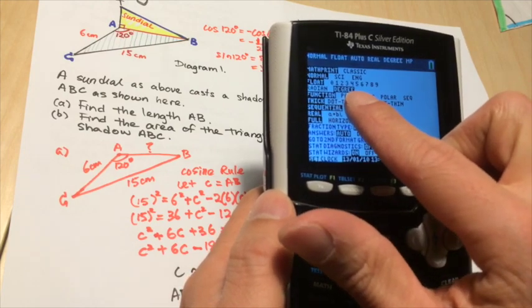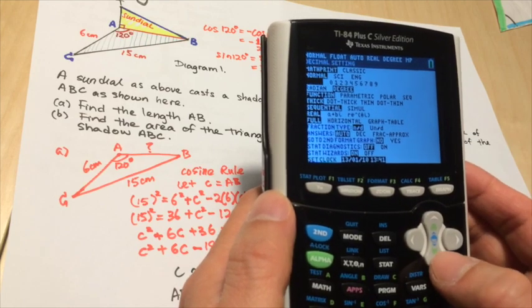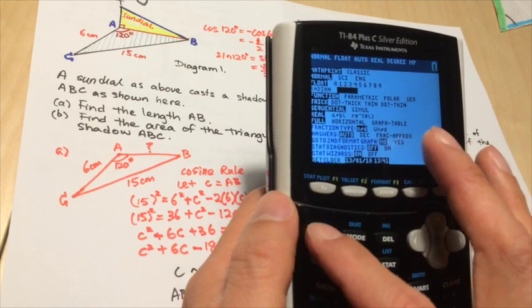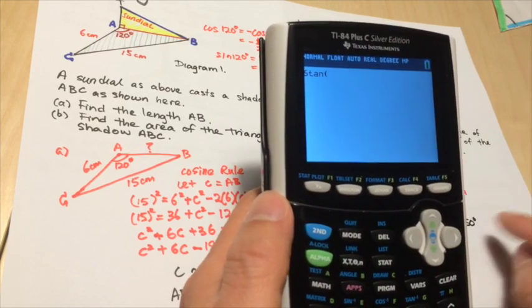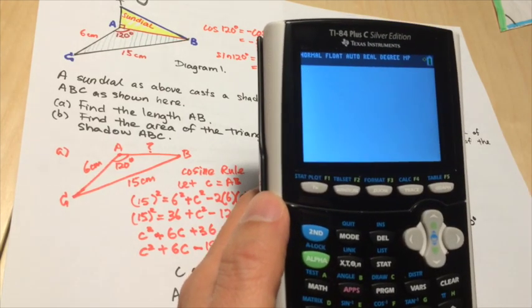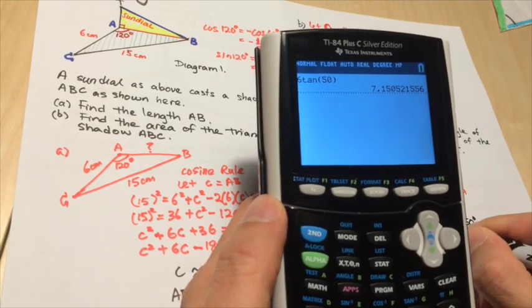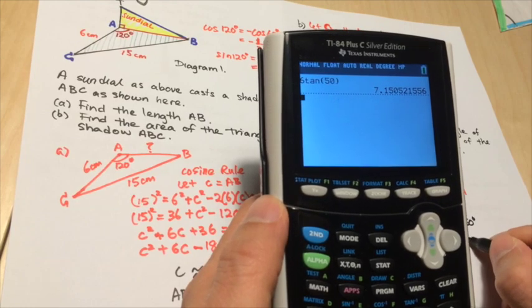Is it in degree? Yes, it is in degree. If it's not, then make sure you change it to degree by going down and press enter, for example, degree. And then second quit to get back to the original place. And then you put in 50 degrees. 6 tangent 50 degrees and then press enter. There you have it. So answer is to 3 significant figures, 7.15 cm. So the height of the sundial is 7.15 cm.